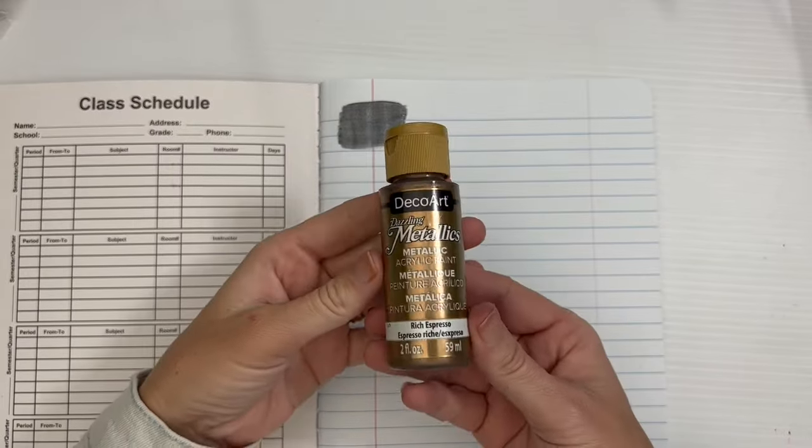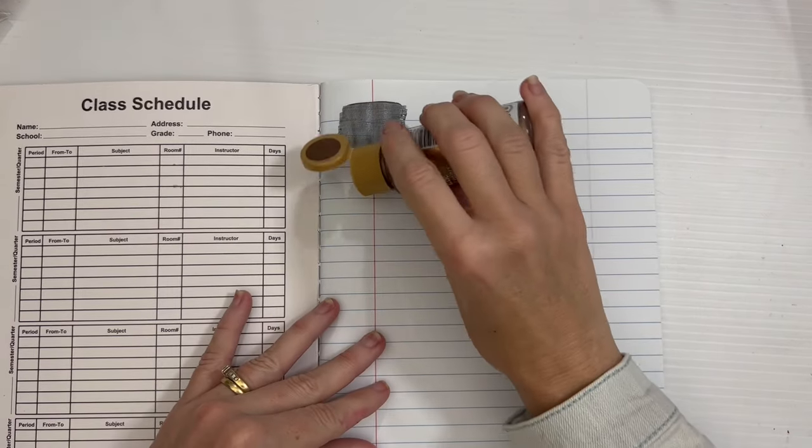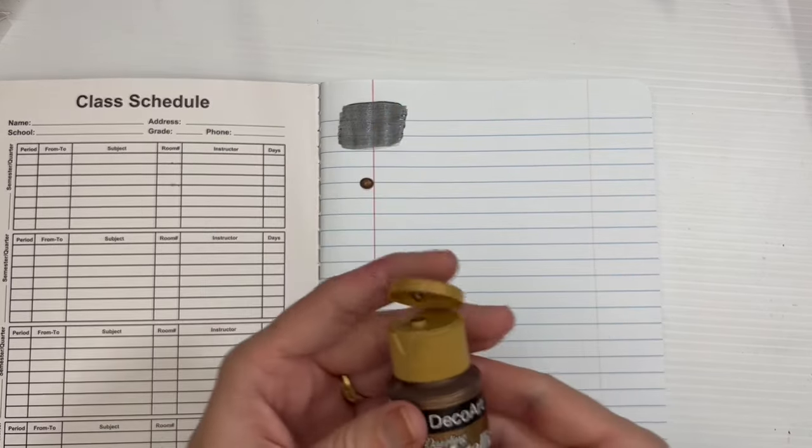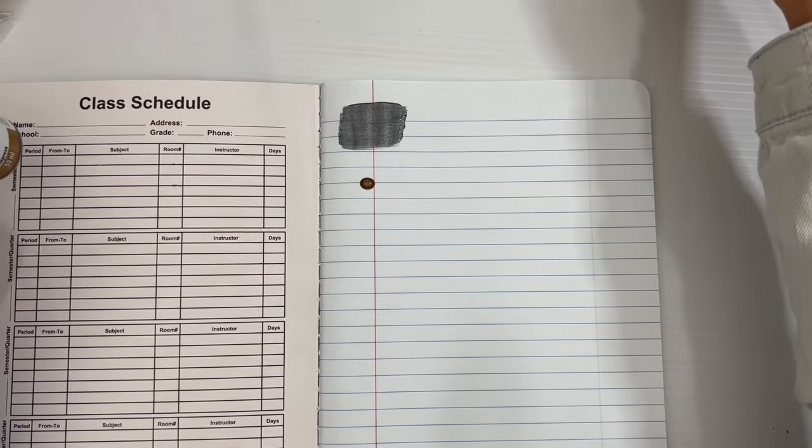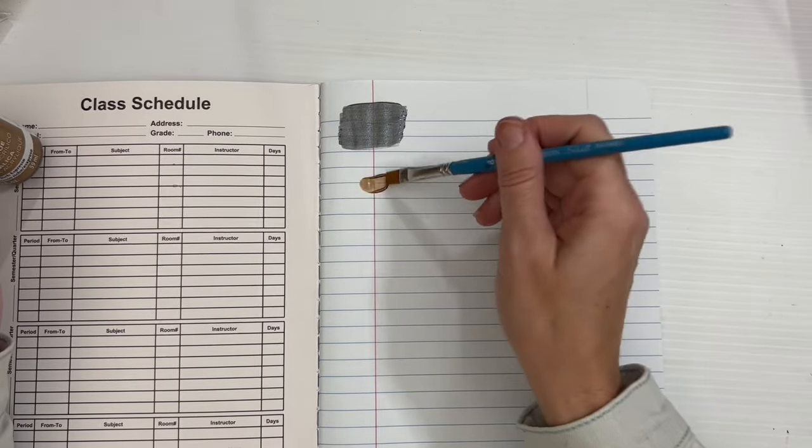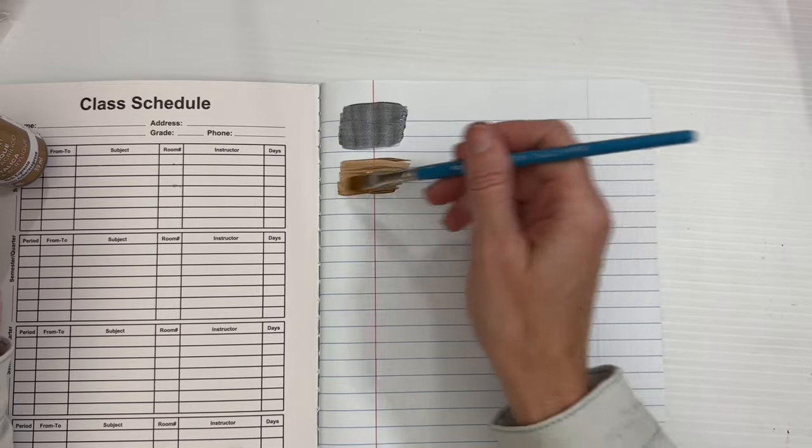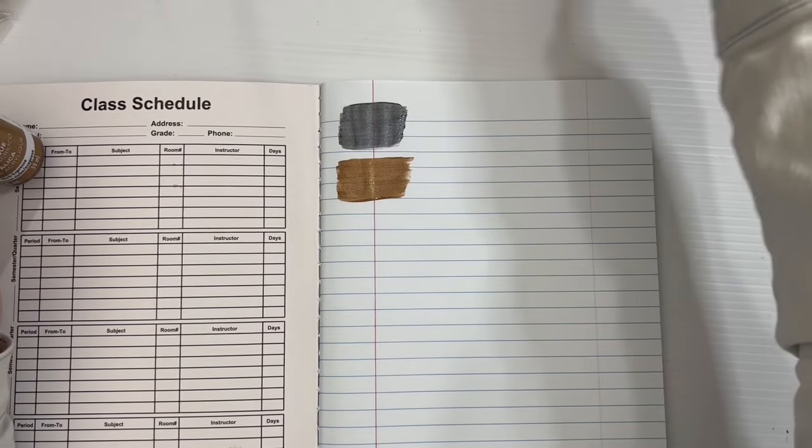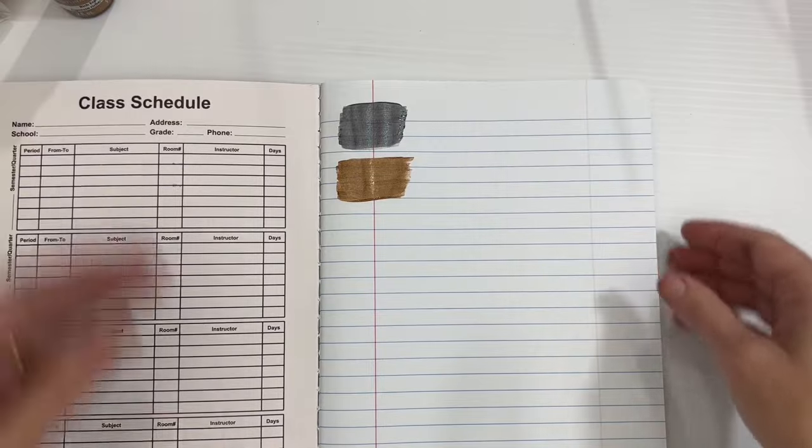So this one, I'll just write the names on them later to save you guys some time. Alright, let's do Rich Espresso. So it's like a brownie color. I'm just going to shake it up. I probably should have shaken them up before but I didn't think that far ahead. So we'll do a dot. Oh, that's pretty. Oh, very nice. Oh, I love these colors already. That's so pretty.